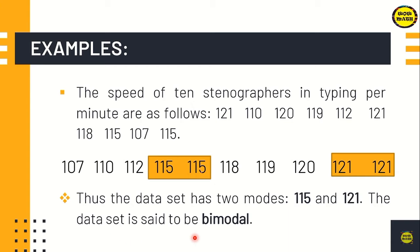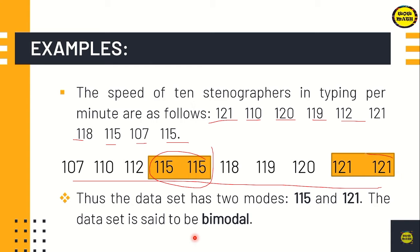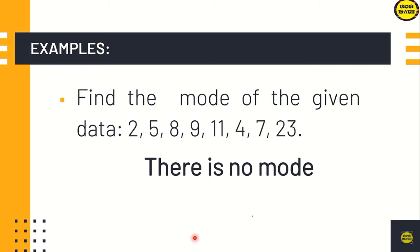For the bimodal example: the speeds of 10 stenographers in typing per minute are 121, 110, 120, 119, 112, 120, 121, 118, 115, 107, 115. Arrange the data. Take note: 115 repeats twice and 121 also repeats. Therefore, those are our modes and the data set is said to be bimodal — there are two most frequent values. If no number repeats in a data set, there is no mode.